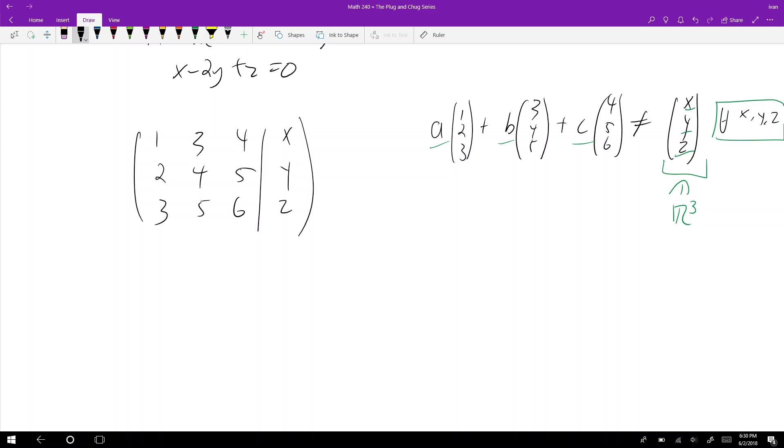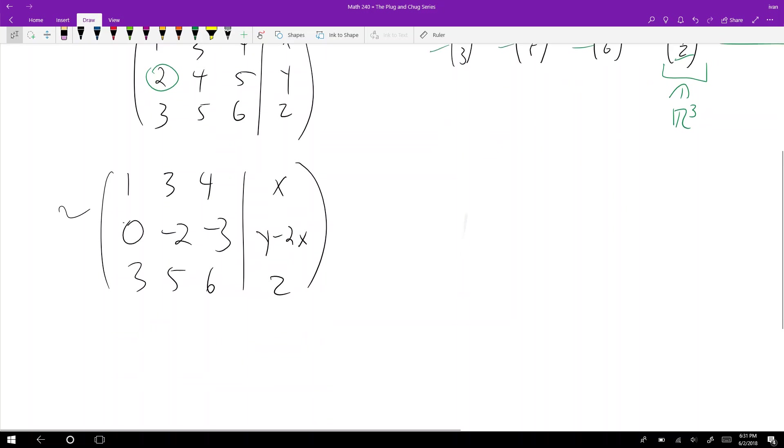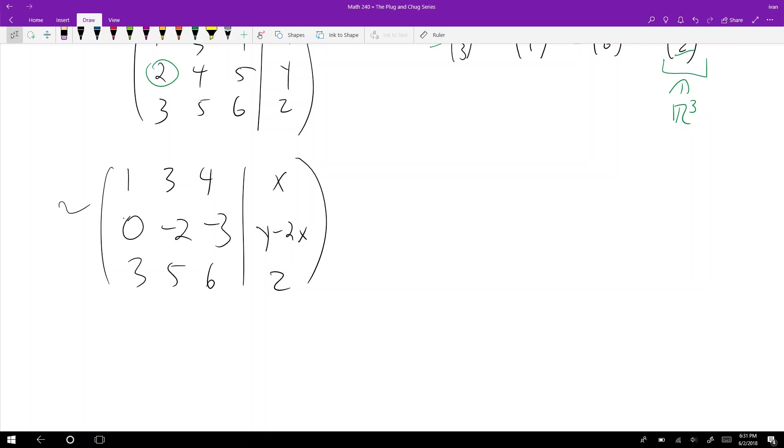We just need to row reduce this. If we reduce to row echelon form, the matrix becomes [1 3 4 x; 0 -2 -3 y-2x]. I want to zero out the bottom entry, so this becomes [1 3 4 x; 0 -2 -3 y-2x; 0 0 0 z-2y+4x].